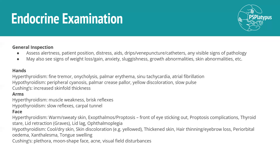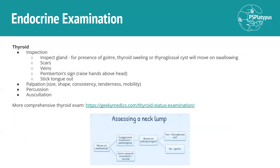With Cushing's, you classically see a moon-shaped face, acne, redness, and visual field disturbances. For the thyroid examination itself, you go through inspection, palpation, percussion, and auscultation. One of the most important aspects is the swallowing test: when you see a lump, if it moves on swallowing with an exaggerated movement, you might consider it pathological. Movement on tongue protrusion helps determine whether it's a thyroglossal cyst or a goitre, as shown in the flow chart.